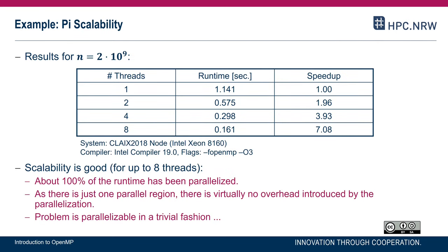Running the pi program on one of our compute nodes on the CLEC system for 1, 2, 4, and 8 threads gives a runtime of 1.1 seconds with one thread and 0.1 seconds for 8 threads. That's a speedup of about 7 on 8 threads because the scalability is good - we've parallelized almost everything, with almost no overhead. This is a trivially embarrassingly parallel problem requiring only one reduction. The pi example was meant to put parallel regions, privatization, and shared variables into perspective and reason about the correctness of a parallel program. With that, I conclude this video.